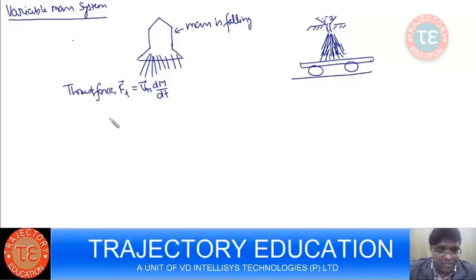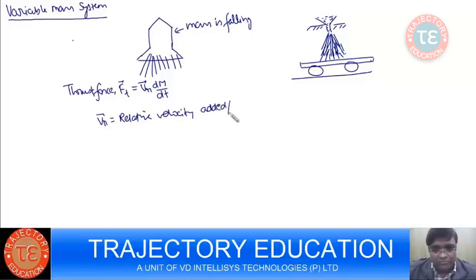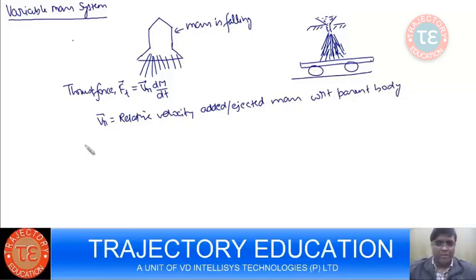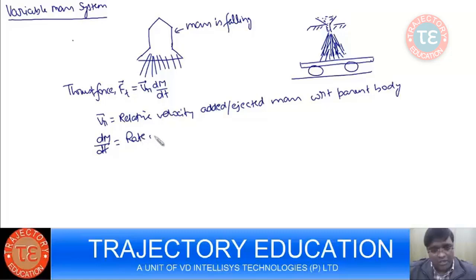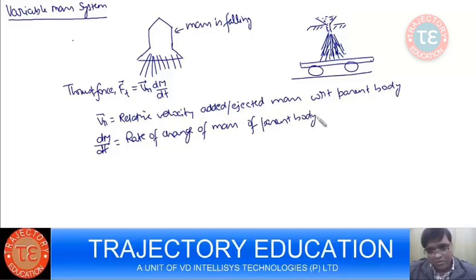What is Vr? Vr is the relative velocity of the added or ejected mass with respect to the parent body. And dm/dt is the rate of change of mass of the parent body.